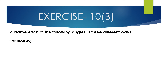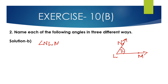Now part B. The figure is given with points L, M, N, and angle 7. Here LN and LM are 2 rays. The angle formed from these 2 rays can be named as angle NLM, angle MLN, and angle 7. These are the 3 different ways of forming this angle with rays LN and LM.